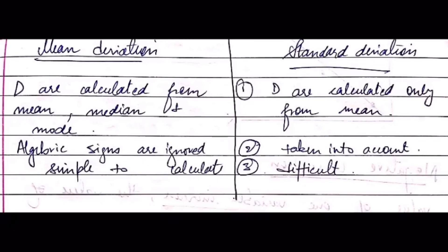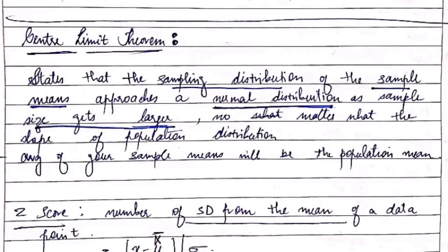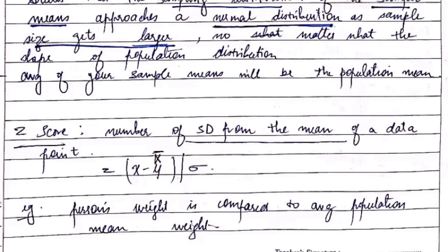Now let's look at the central limit theorem. It states that the sampling distribution of the sample means approaches a normal distribution as the sample size gets larger, no matter what the shape of the population distribution. The average of your sample means will be the population mean. We can calculate the z-score by using the number of standard deviations from the mean of a data point — for example, when measuring a person's weight, it is compared to the average population mean weight.